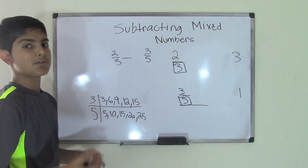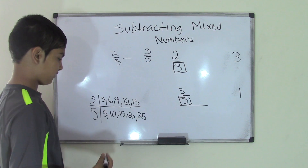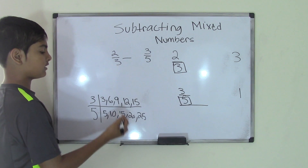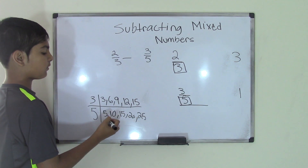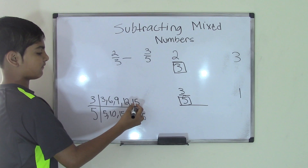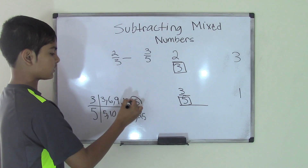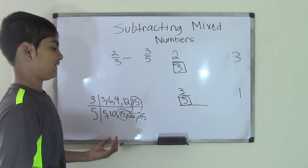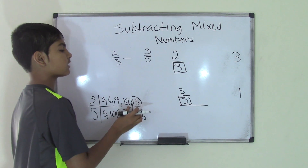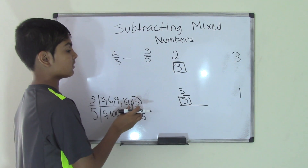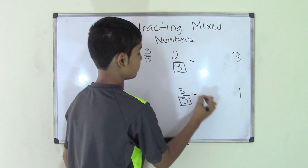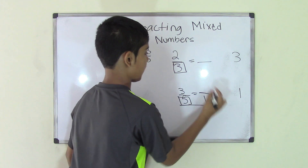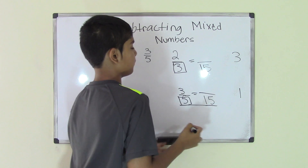The least common multiple is the first common multiple you find. So looking at the multiples of 3: 3 — no match; 6 — no match; 9 — no match; 12 — no match; 15 — there is a 15! That means there are two matching 15s. Since this is the first common multiple, 15 will be our least common multiple.